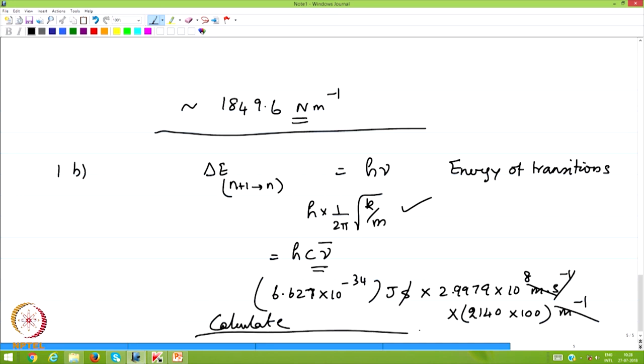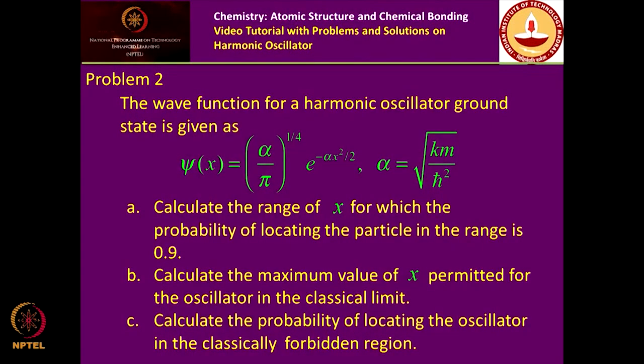The second problem is more involved. It uses the wave function for the harmonic oscillator ground state and asks you to calculate the range of x for which the probability of locating the particle is 0.9. The square of the wave function plotted as a function of x gives an area under the entire graph equal to 1, since the wave function is normalized.